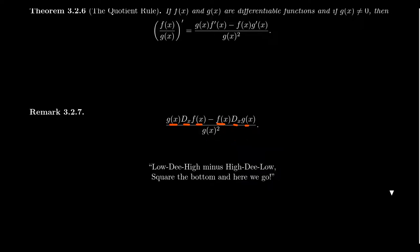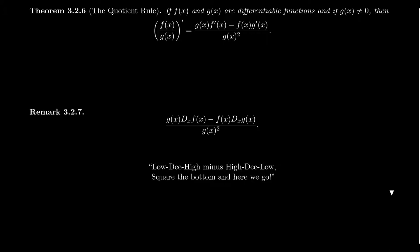With that notation you get the following little couplet: 'Low d high minus high d low, square the bottom here we go.' So 'low' is the function on the bottom, 'high' is the function on the top. Low d high means you take the denominator function times the derivative of the numerator. Then high d low means the numerator function times the derivative of the denominator. Square the bottom, here we go — and 'here we go' rhymes with 'low' to help you remember the correct order.